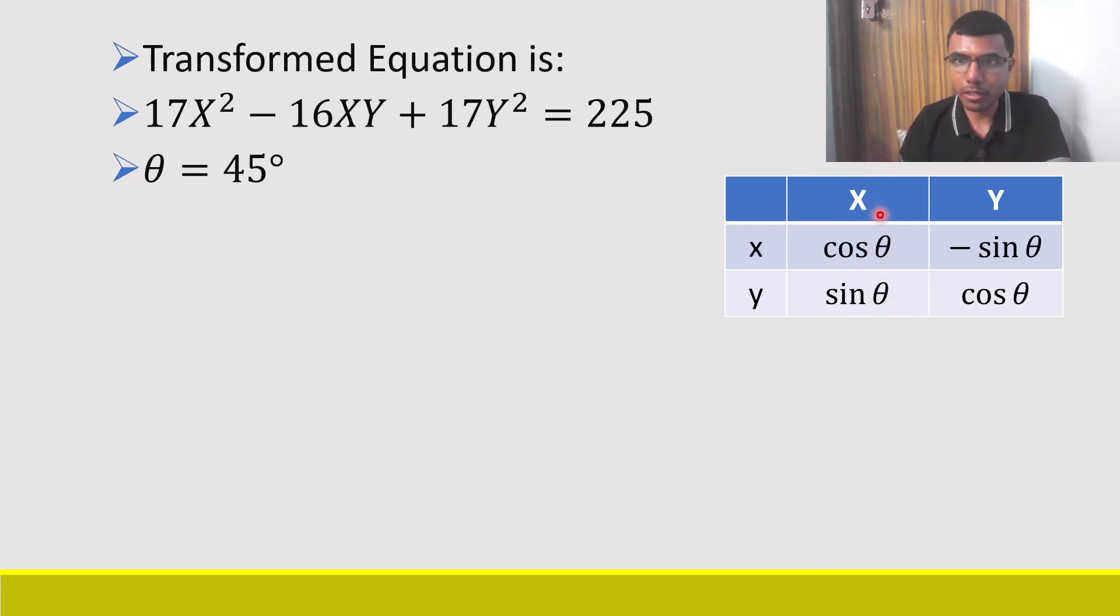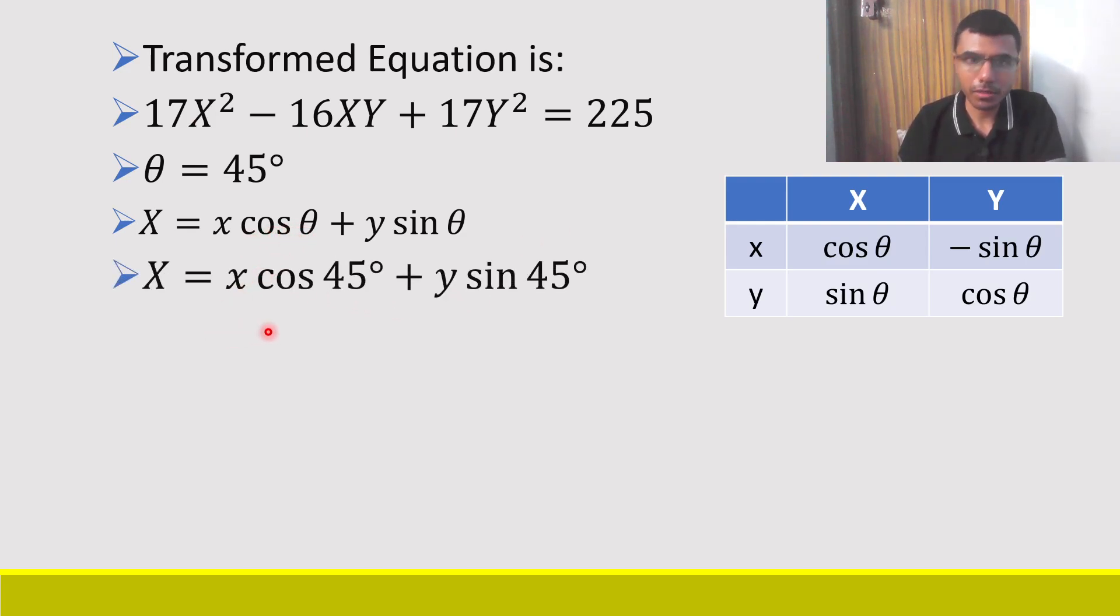Now capital X is nothing but equal to small x times cos θ plus small y times sin θ. Now why I want to write it like this? So that ultimately I can write this capital X here, so my equation will change to the original equation. Now here angle is 45 degrees, so just substitute it. Cos 45° is 1/√2 and sin 45° is 1/√2. So the denominator is common. So ultimately what I get is (x + y)/√2.